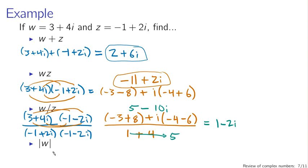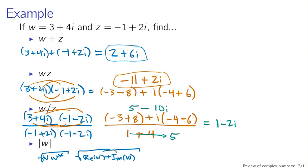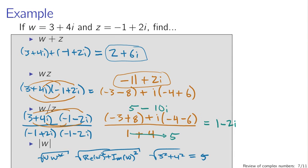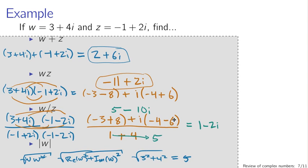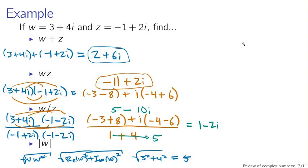For the absolute magnitude of w — 3 plus 4i — we can compute the square root of the real part squared plus the imaginary part squared: square root of 3 squared plus 4 squared, which is the square root of 25, which is 5. That was all in rectangular form. Now let's do a subset of it in polar form.